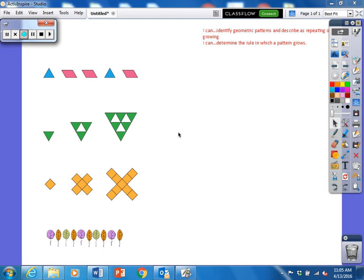Today we are going to be practicing and reviewing the ICANN statements of identifying geometric patterns and describing as repeating or growing and also determining the rule in which a pattern grows.